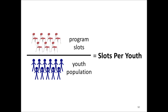Now let's say we want to compare how many opportunities are available for youth across Boston across different neighborhoods. In that case, we need to adjust for the relative youth populations. So we are going to be using a term referred to as slots per youth, which is simply taking the total number of available program slots and dividing it by the youth population. This gives us a comparable measure that we can use to compare across different neighborhoods within Boston.